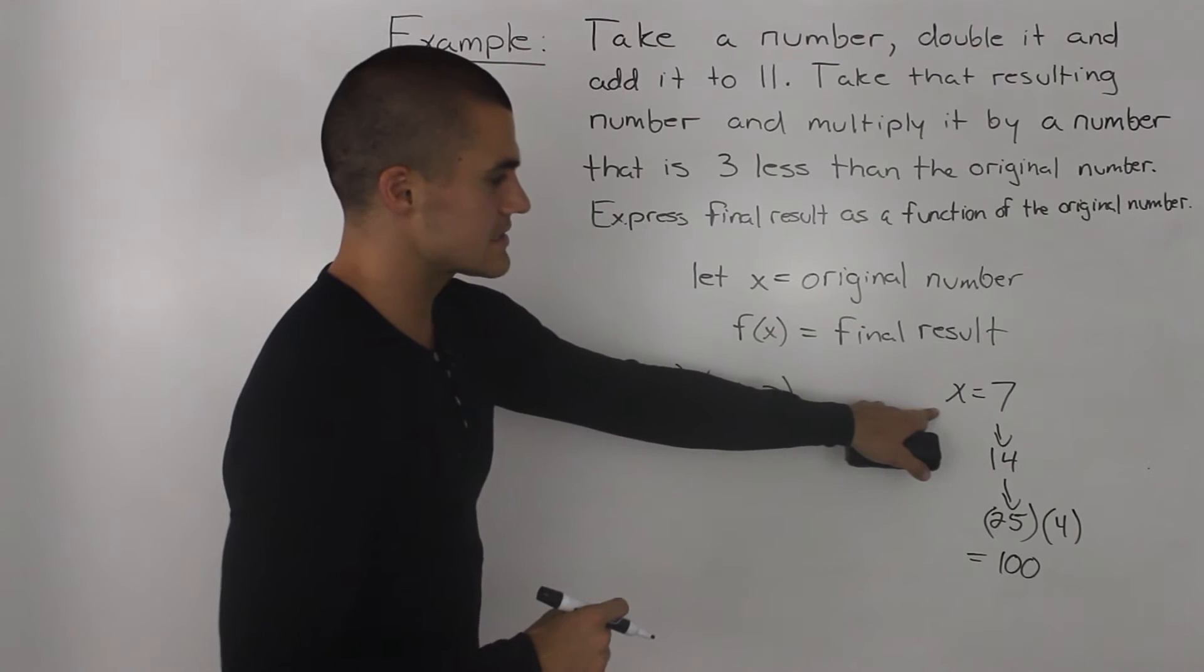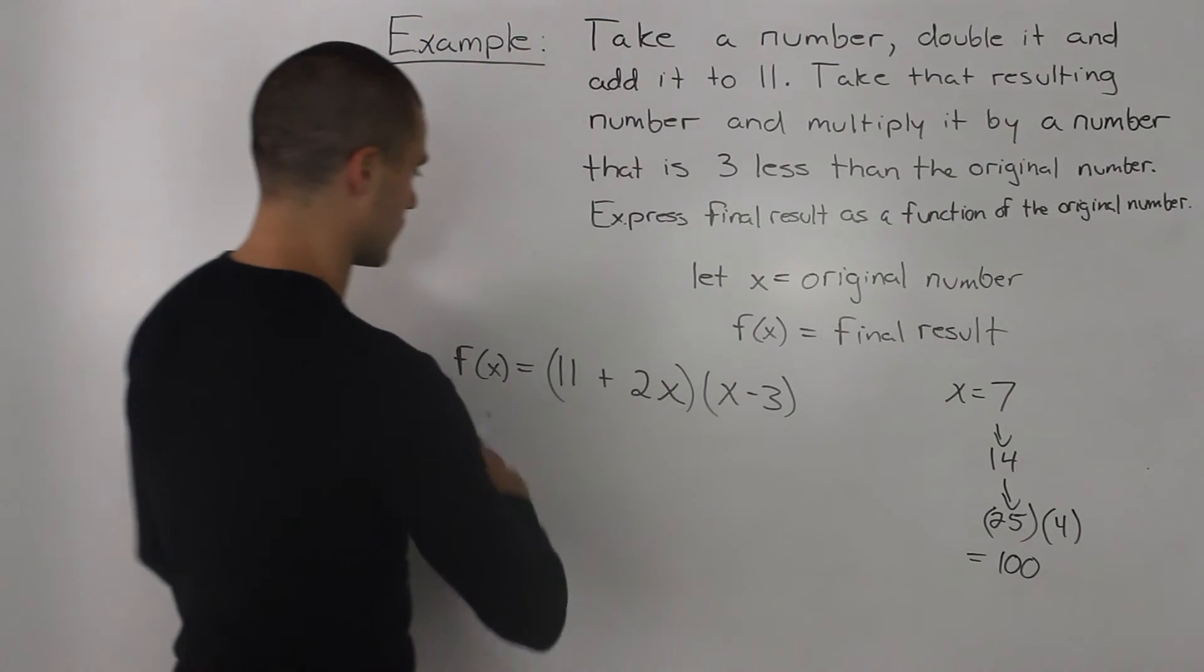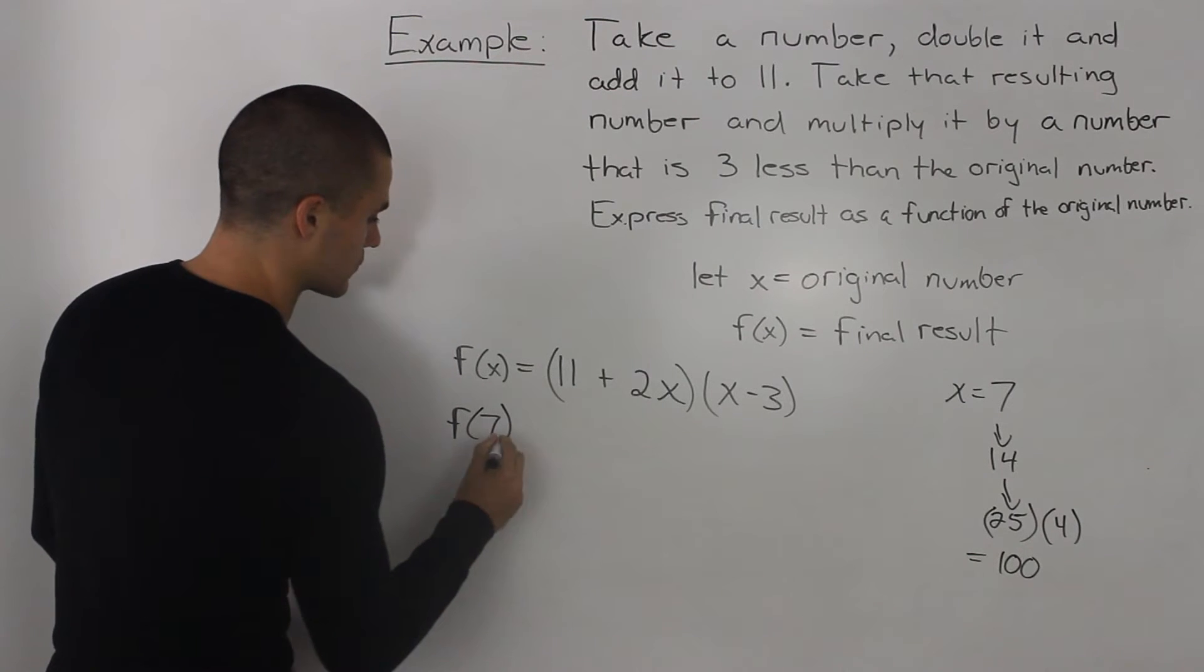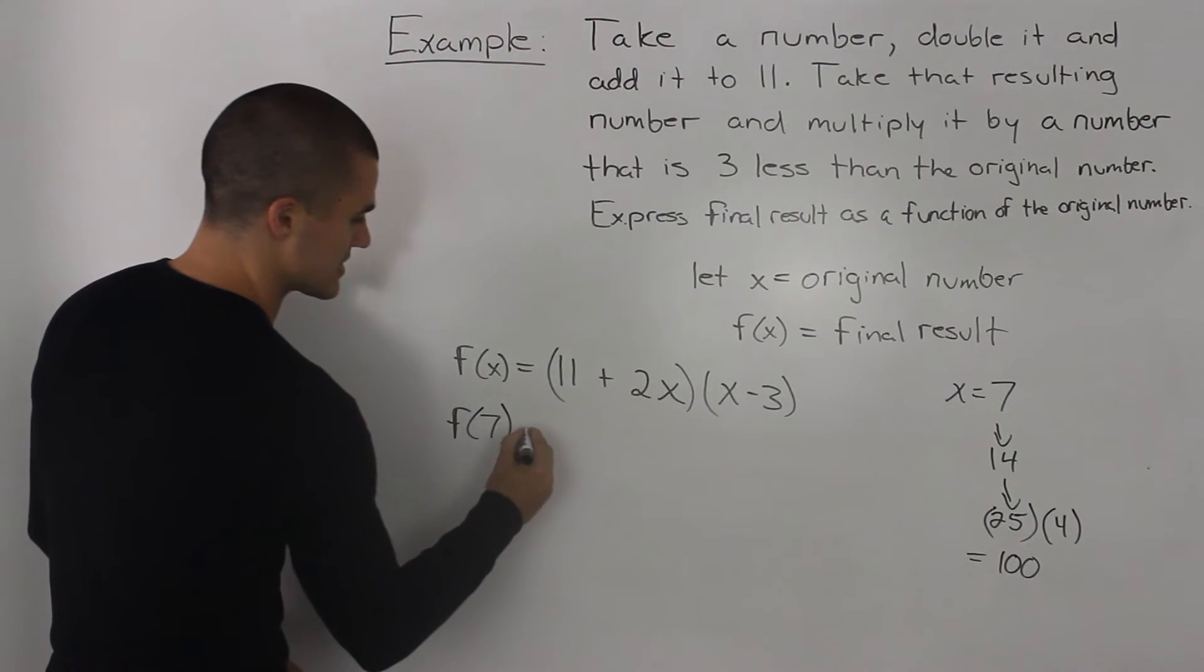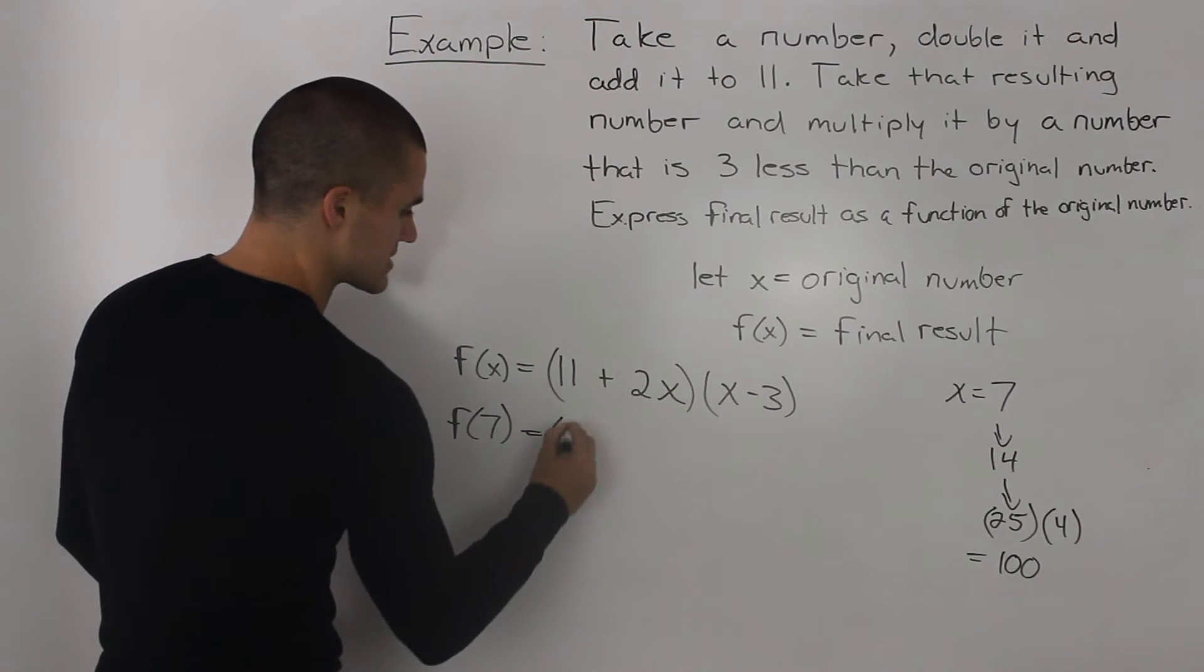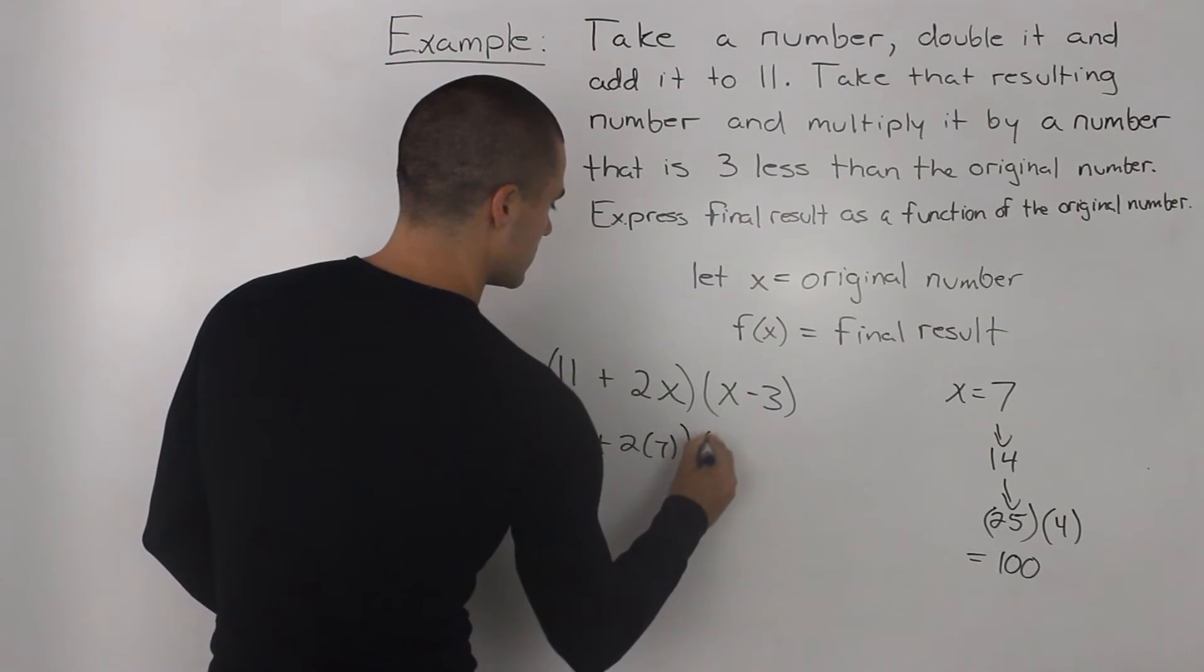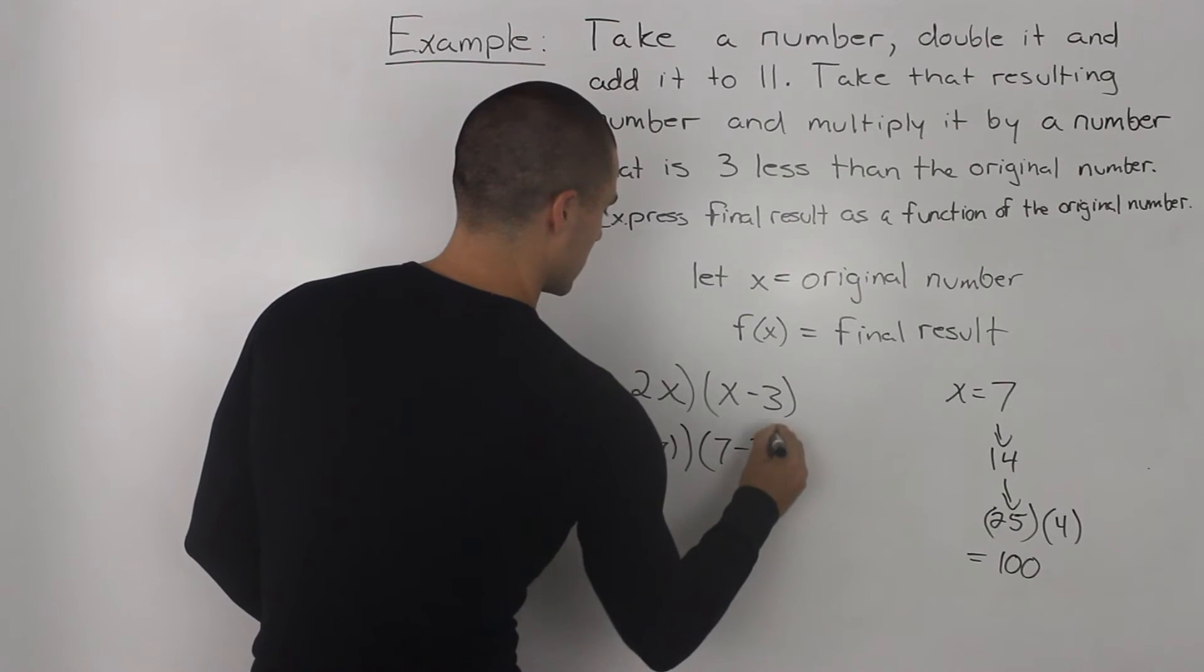So, let's test this original value of 7 with our function that we have. So, we would see what we get as a final result when our original number is 7. So, just plugging in 7 for the x values.